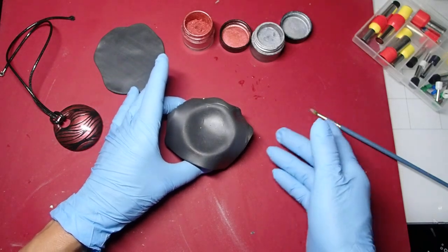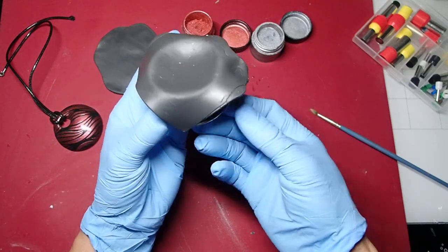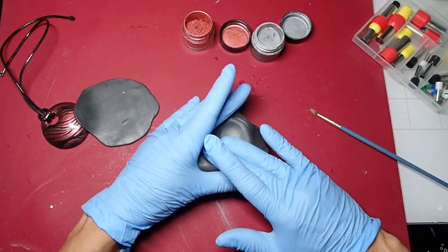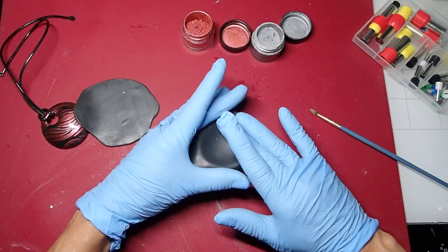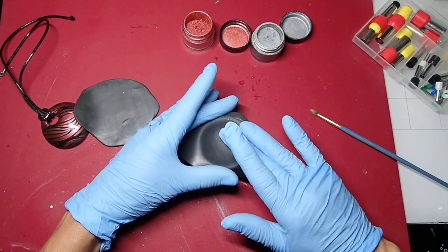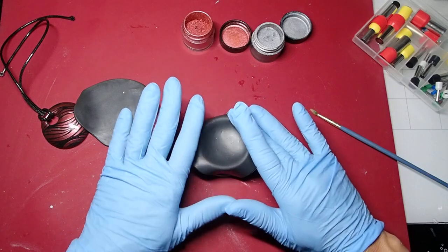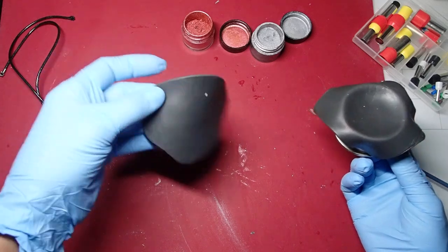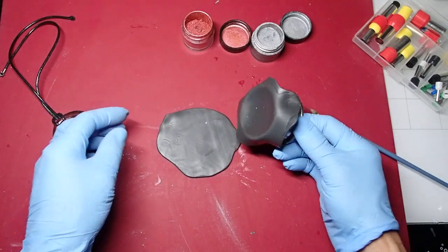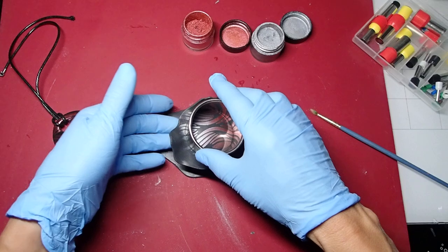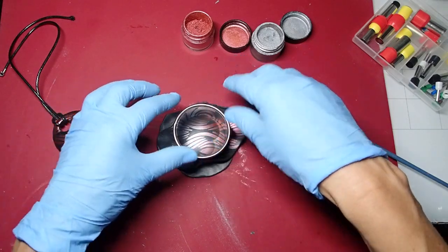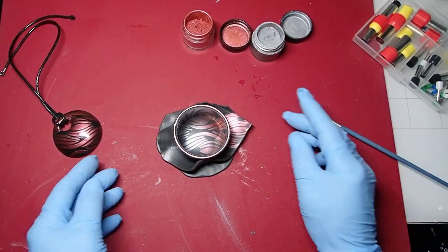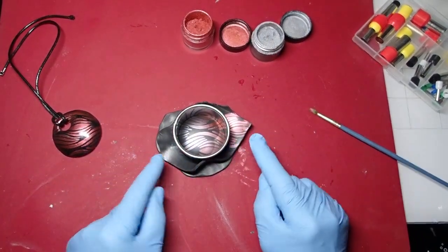I have another black clay that I rolled out. Let me just stretch it just a little bit more. Both pieces are rolled out on number one of the pasta machine. I think this is going to be enough, so I'm going to place it right there on top and cut.